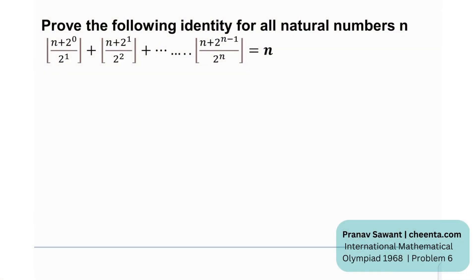So prove the following identity for all natural numbers n. As you can see, we have floor functions involved. This is a very classic identity and it works for all natural numbers n — it really is an identity in its full glory.